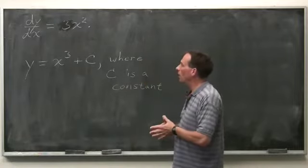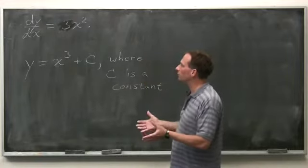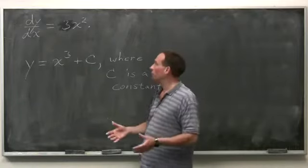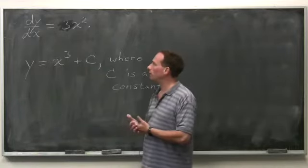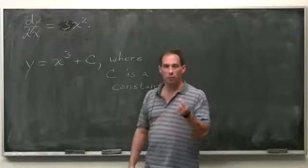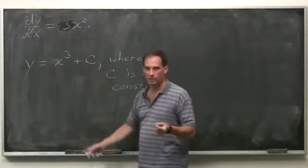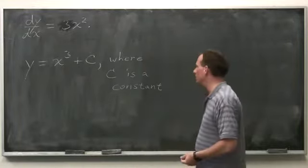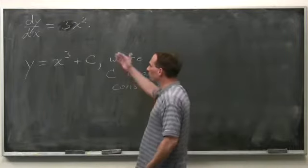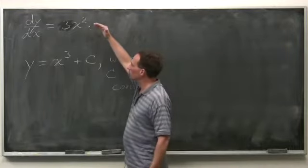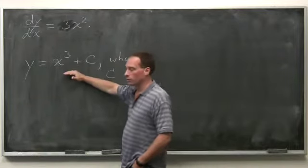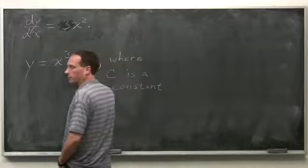So how do you find all anti-derivatives — all the solutions to dy/dx equals a function of x? You find one of them, and then you put a big plus c. The general solution to this differential equation is x cubed plus c, where c could be any constant.